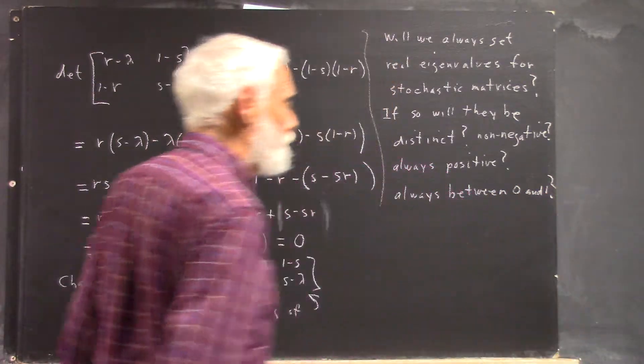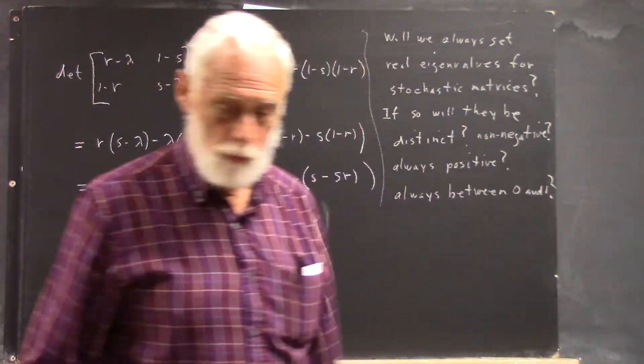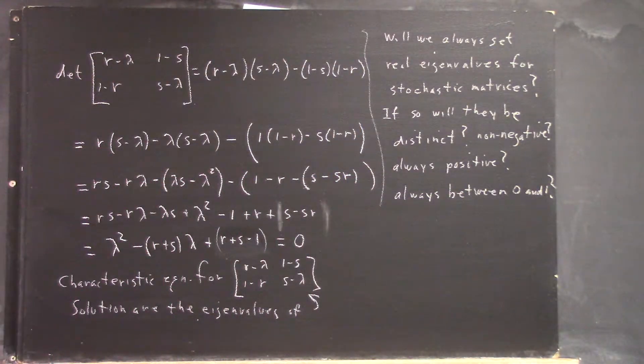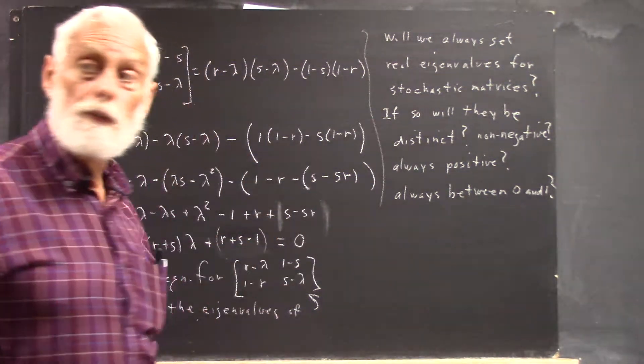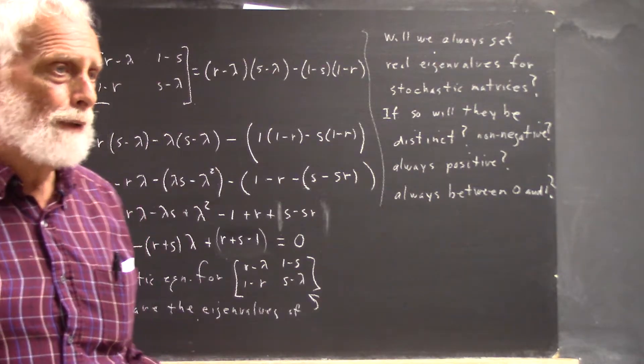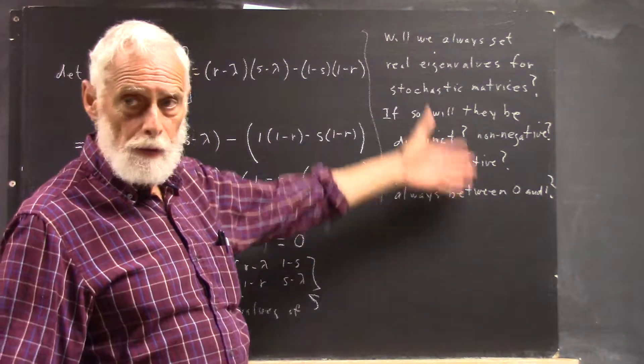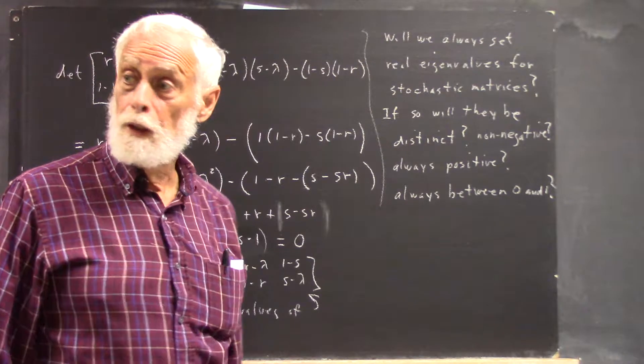Will they always be between zero and one? That horrible looking thing is a question mark there. These are questions that naturally arise when you look at solutions of an equation, and they're particularly relevant to the eigenvalues of this stochastic matrix.